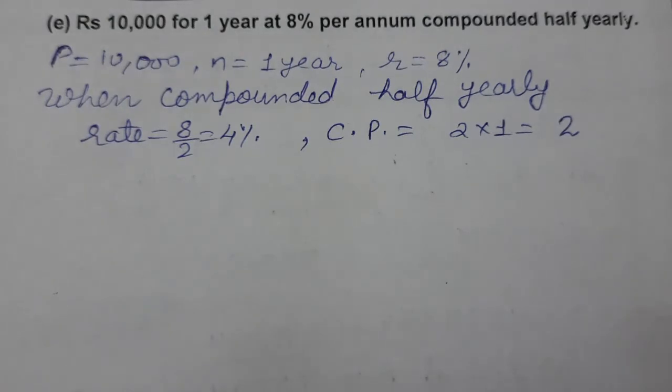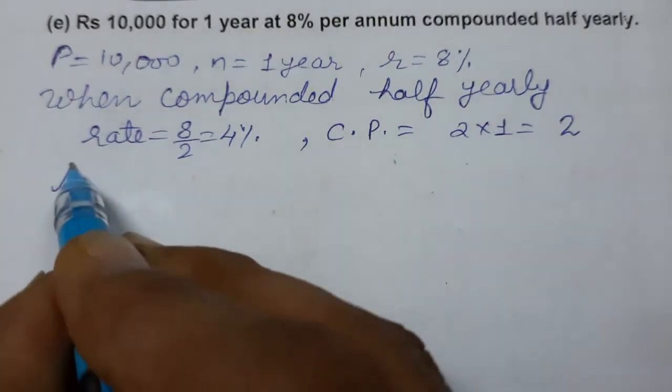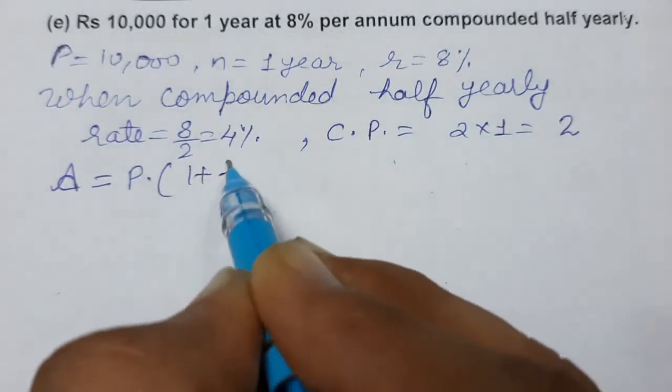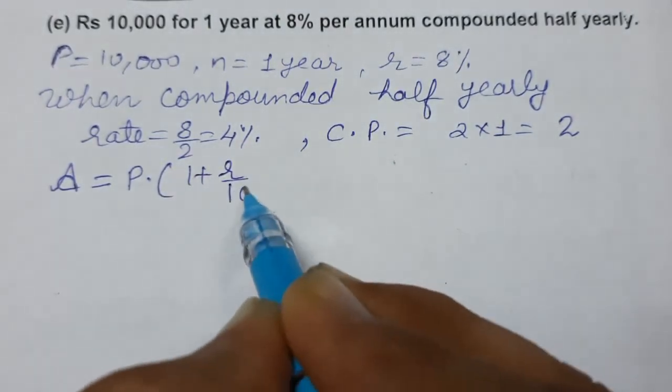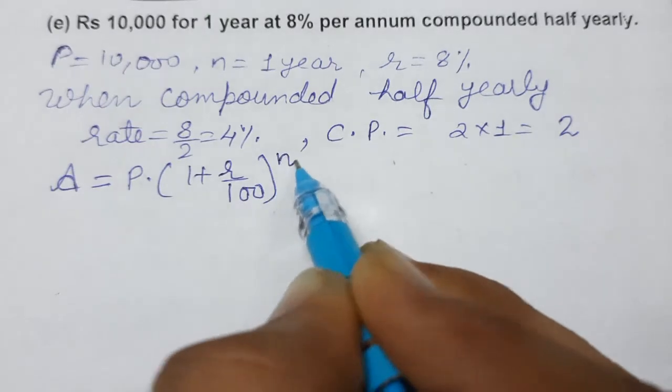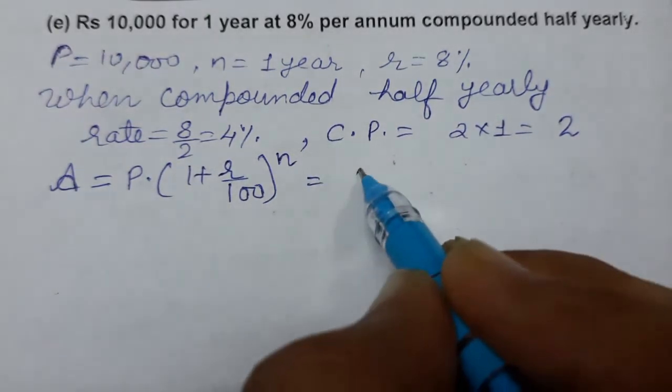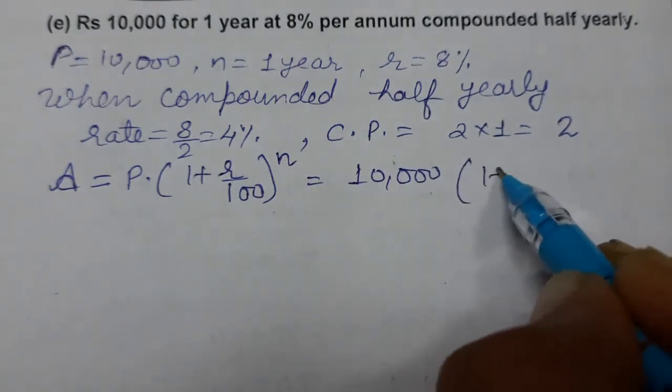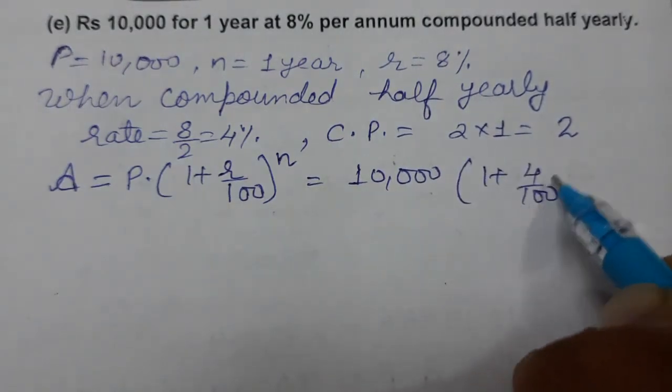Now we'll find the amount. Amount equals P times (1 plus r by 100) raised to the power n. Principal is 10,000, rate is 4% by 100, and the number of conversion periods is 2.